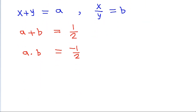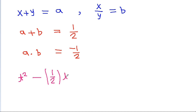We have a plus b and a into b. So the quadratic equation having roots a and b will be t squared minus the sum of roots, that is 1 by 2 times t, plus the product of roots, that is minus 1 by 2, is equal to 0.